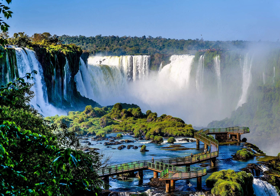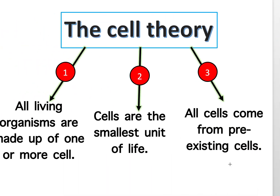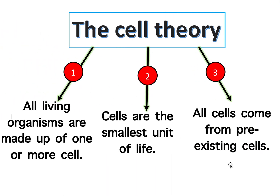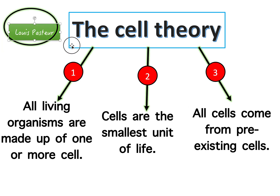In this video we're going to be talking about the origin of cells, subtopic 1.5. We learned before that there's something called the cell theory, and it has three key points: one, all living organisms are made of one or more cells; two, cells are the smallest unit of life; and three, all cells come from pre-existing cells. In this video we need to focus on this last one.